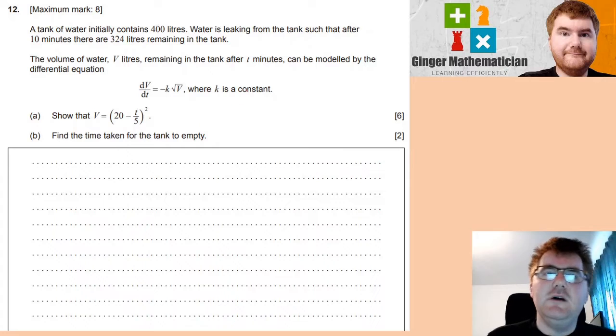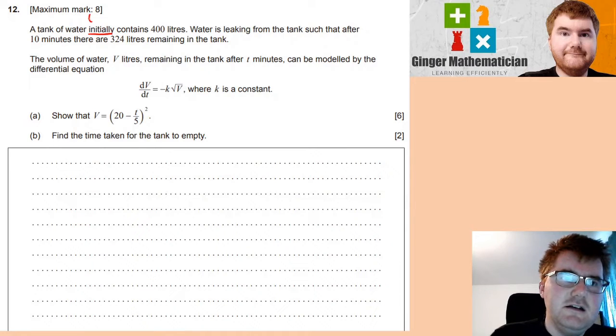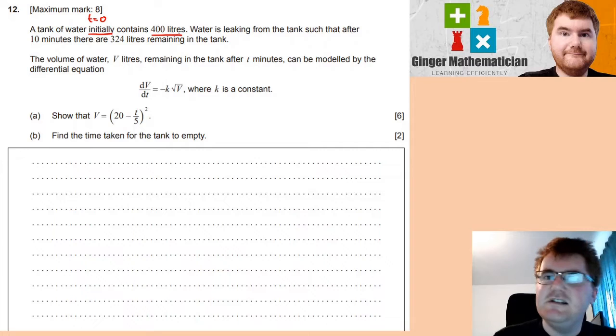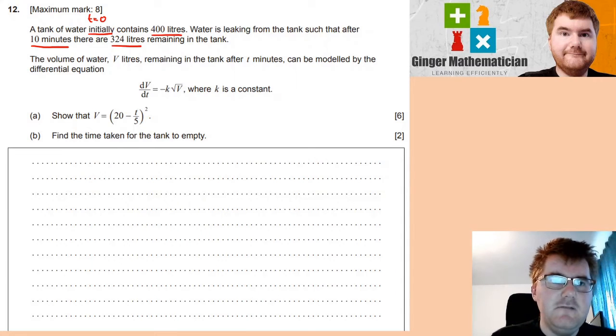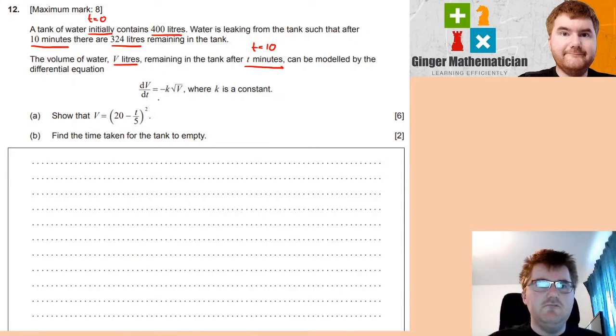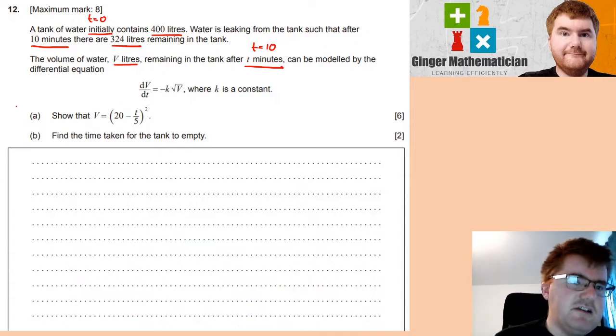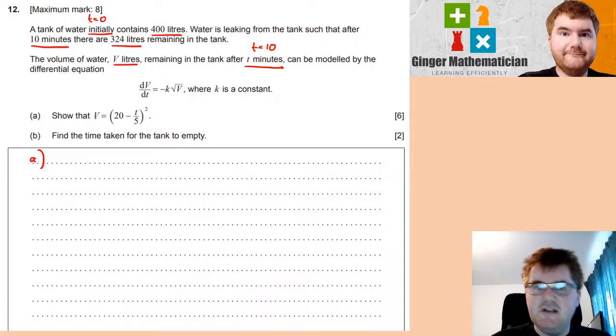And on to question 12. A nice integration question. So, let's go through this question carefully. A tank of water initially, so that's going to be right at the start when T is equal to 0, contains 400 litres. Water is leaking from the tank, such that after 10 minutes, there are 324 litres remaining. The volume is in litres, in the tank after T minutes. And we model by this differential equation. And we need to show that V is equal to this. This is a reasonably long process. We're going to do something called separation of variables.